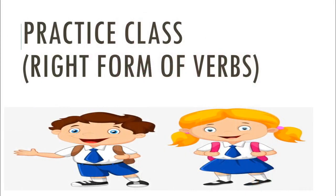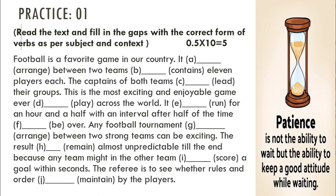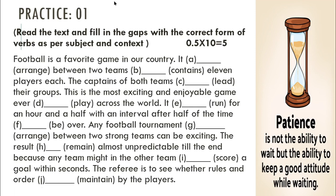Today we are going to discuss some questions regarding the right form of verbs. In practice number one, read the text and fill in the gaps with the correct form of verbs as per subject and context. The passage begins: 'Football is a favorite game in our country. (A) dash arranged between two teams. (B) dash contains 11 players each.'